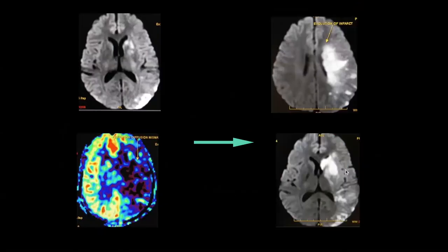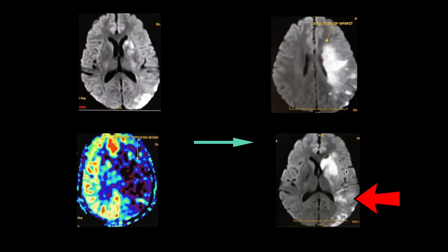This is a different patient where there is definite perfusion-diffusion mismatch on the first set of images, but due to some reasons this patient was not taken for any active intervention. On follow-up, the entire hypoperfused area developed into an actual infarct, illustrating the importance of timely treatment.